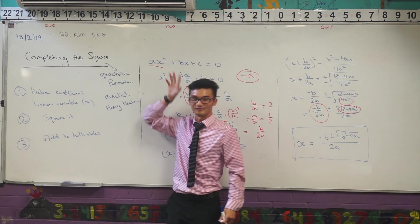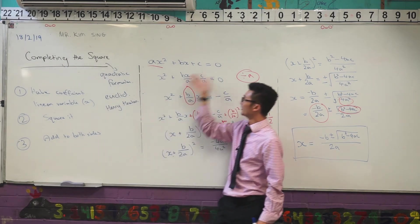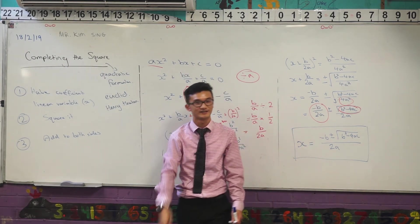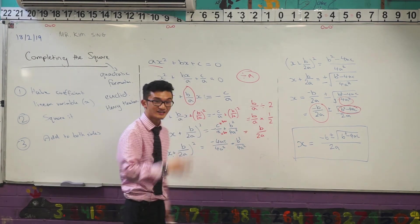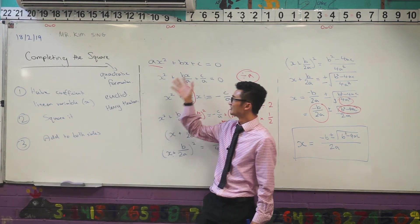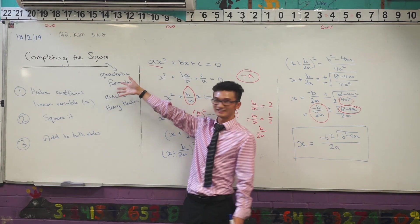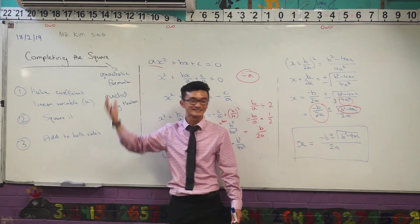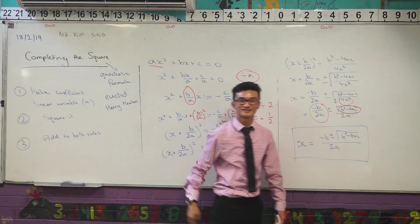So that's how we can take our process of completing the square for a general quadratic equation, and we end up ourselves with that formula there. So it's really cool to see that so many years ago they discovered something like this, but even now we can use these algebraic tools and these ideas and come up with these formulas ourselves to see how they really work.